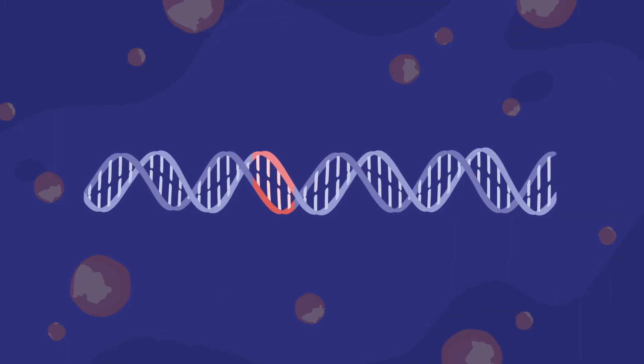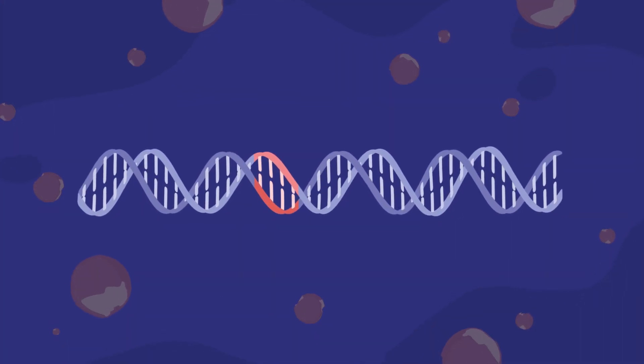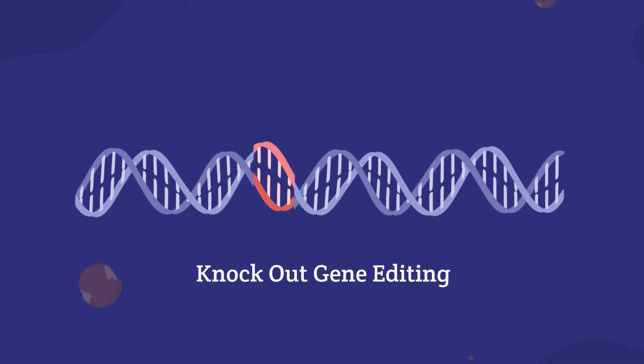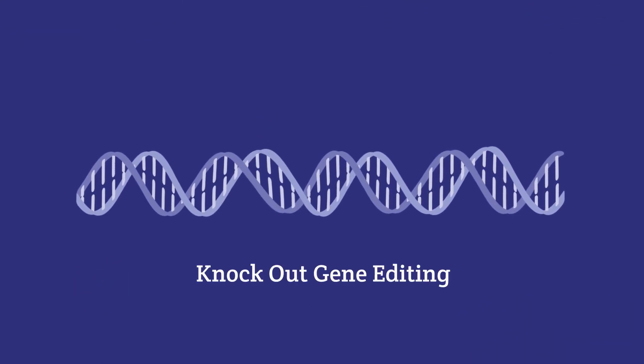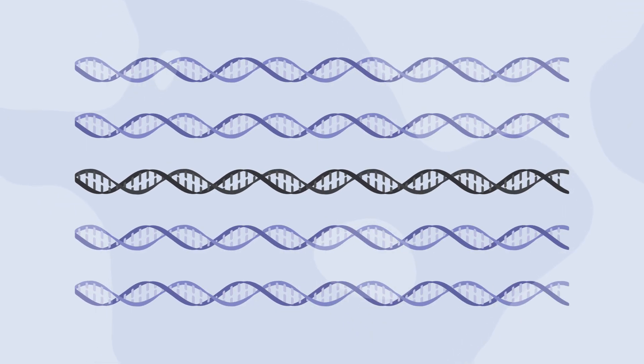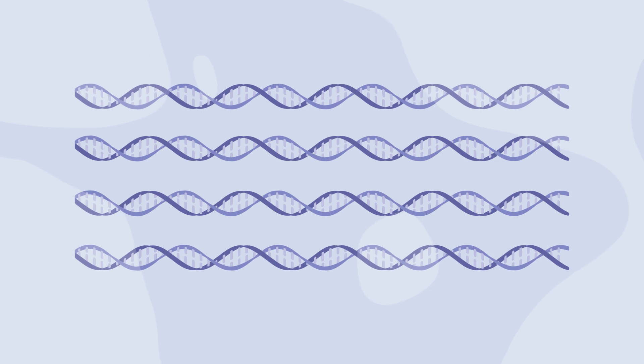For other diseases where a faulty gene may cause too much of a protein or dysfunctional proteins to be produced, gene editing can be used to silence or knock out certain genes in a cell. This approach alters or removes the problematic DNA sequence entirely.